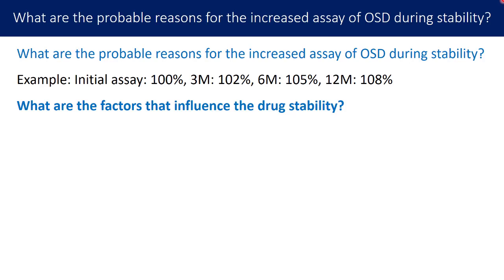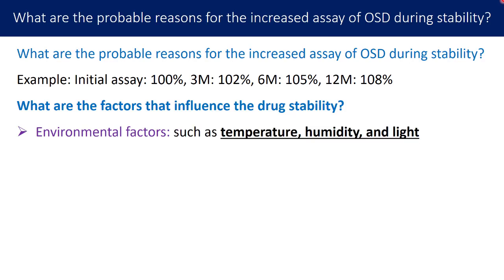Before we move on to the probable reasons, let us understand the influencing factors on drug stability. There are two prominent factors: one is environmental factors and the second is product-based factors. Environmental factors include the impact of temperature, impact of humidity, and impact of light.